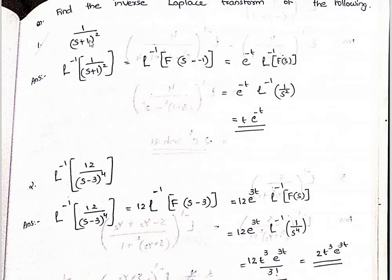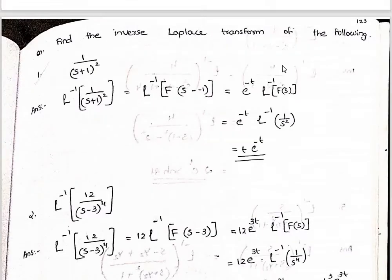For the inverse Laplace transform of 1 divided by (s plus 1) squared: s minus (minus 1) gives F of s minus (minus 1), so the answer is e raised to minus t times the inverse transform of F of s, which is the inverse of 1 by s squared.